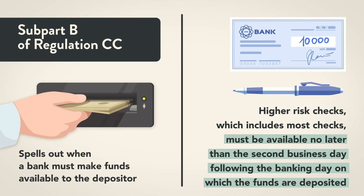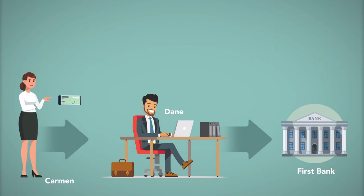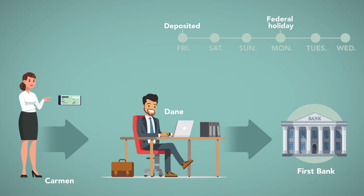Higher-risk checks, which include most checks, must be available no later than the second business day following the banking day on which the funds are deposited. For example, Carmen writes a check payable to Dane, who deposits the check in his bank account at First Bank on a Friday with the following Monday a federal holiday. His check is subject to second-day availability; in this situation that would be the following Wednesday — the second business day after the banking day of deposit.